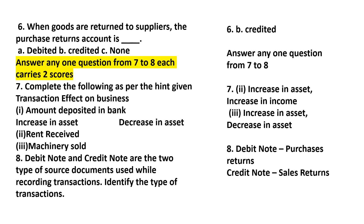When goods are returned to suppliers, we record a purchase return. The supplier account is debited and the purchase return account is credited. The answer is to credit the purchase return account.